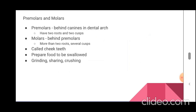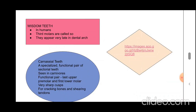Premolars are placed behind canines in the dental arch; they have two roots and two cusps. Molars are placed behind premolars; they have more than two roots and several cusps. Both are known as cheek teeth and prepare food to be swallowed through grinding, shearing, and crushing. In humans, the third molars are called wisdom teeth because they appear very late in the dental arch.